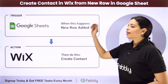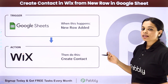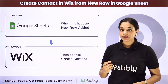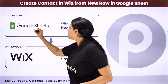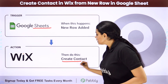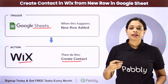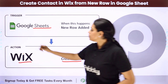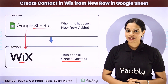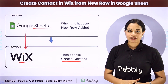In this video, we are going to understand how to create a contact in Wix from a new row in Google Sheets. Every time new information is added as a new row in my spreadsheet, automatically a contact should be created in Wix, which is a leading website building platform. We will be integrating these two applications using PabblyConnect, where the trigger application will be Google Sheets and the action application will be Wix.